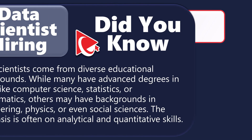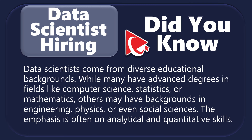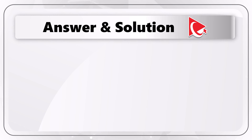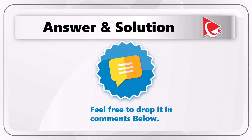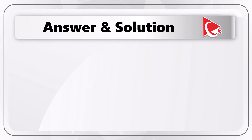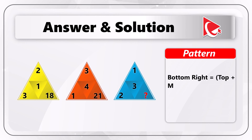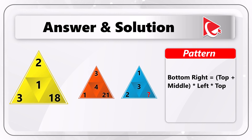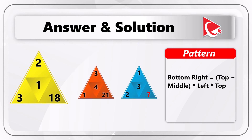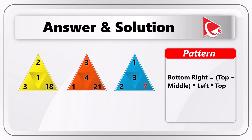On my end, I got my answer, and I am excited to share with you my problem-solving strategies. So let's go ahead and learn the solution together. And if you got your genius move up your sleeve, make sure to share in comments. As you might have guessed, the first step is to determine the pattern. In this particular pattern, the bottom right number is calculated as the sum of the top and middle numbers, multiplied by the left number, and by the top number.